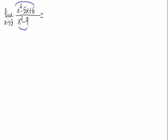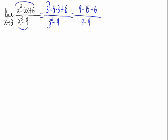Because the quotient of two polynomials is a continuous function, we replace the x's. x tends to 3, so we replace x by 3. On top we get 3 squared minus 5 times 3 plus 6. Underneath we get 3 squared minus 9. This gives us 9 minus 15 plus 6 on top, and 9 minus 9 underneath. On top we get 9 minus 15, which gives minus 6 plus 6 equals 0. And underneath, 9 minus 9 equals 0 as well.